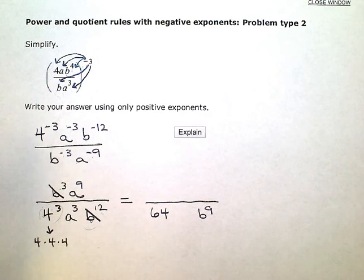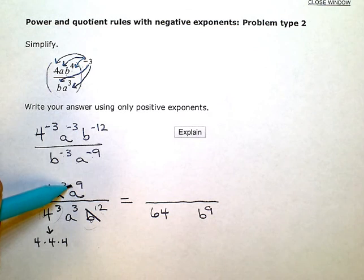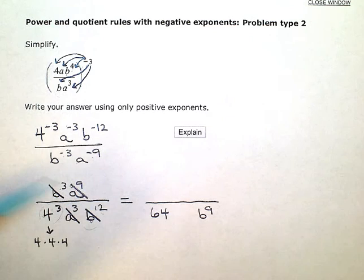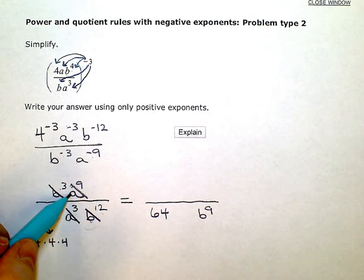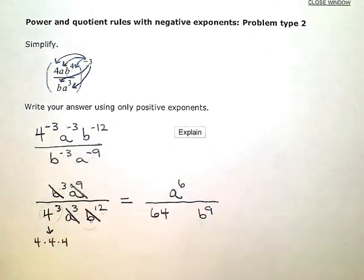Now just the reverse is going to happen with the a's. I have more factors of a in the numerator. So, these three factors are going to cancel with three factors up here, leaving six factors of a in the numerator.